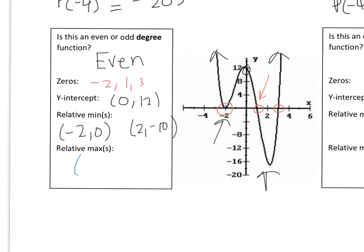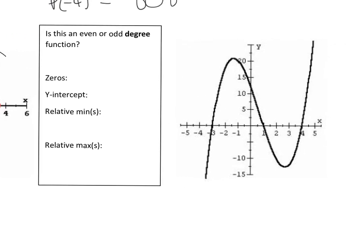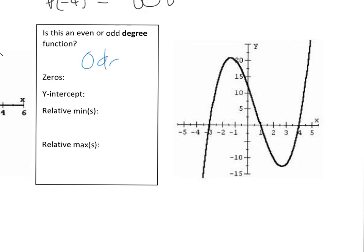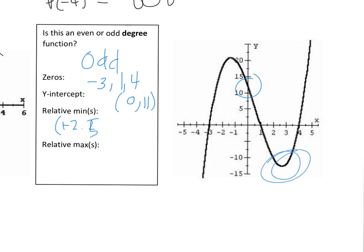This one looks like it's an odd degree. The zeros are approximately negative 3, 1, and 4. The y-intercept is crossing at approximately 11. The relative min — I'm approximating — is at positive 2.5 and negative 12.5. You should also be able to do this on your calculator. The relative max looks like about negative 1.5, and then around 20.